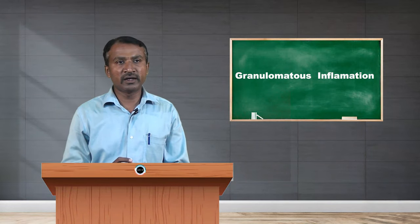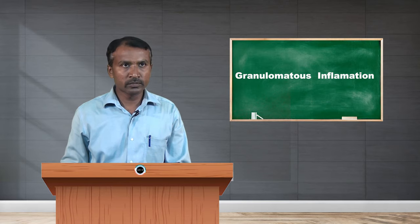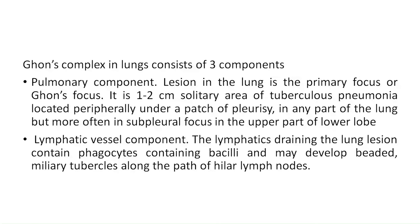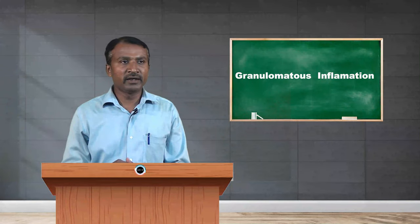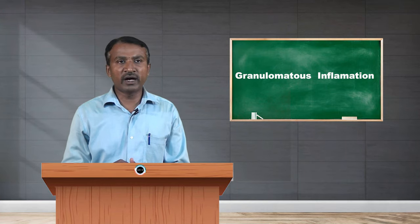The Ghon complex in the lungs consists of three components. The pulmonary component — the primary focus or Ghon focus — is a 1–2 centimeter solitary area of tuberculous pneumonia located peripherally under a patch of pleurisy, more often in the subpleural focus in the upper part of the lower lobe. The lymphatic vessel component shows phagocytes containing bacilli and may develop beaded miliary tubercles along the path toward the hilar lymph nodes.